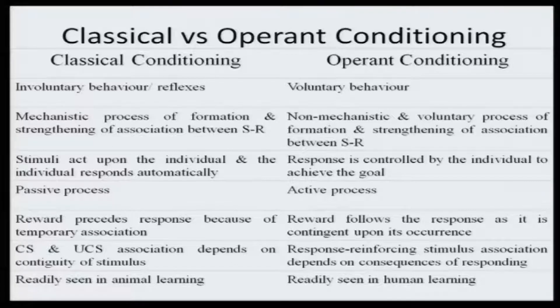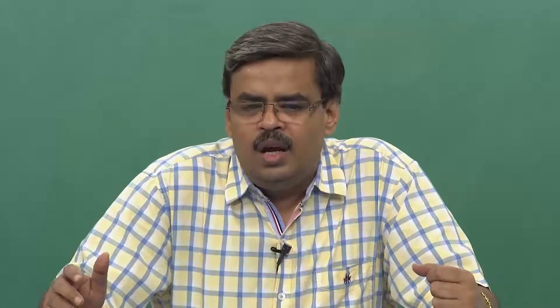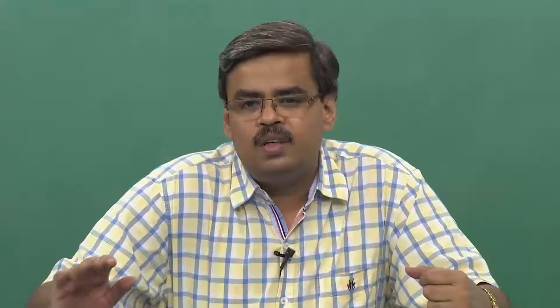The third difference is that in classical conditioning, stimuli act upon the individual and the individual responds automatically — there is no goal set by the individual. The organism does not give a response in order to achieve a goal. Whereas in operant conditioning, there is a goal you set for yourself. You receive positive feedback or the aversive stimulus is removed, and the response is controlled by the individual so that the goal can be attained.